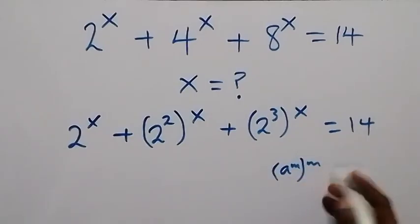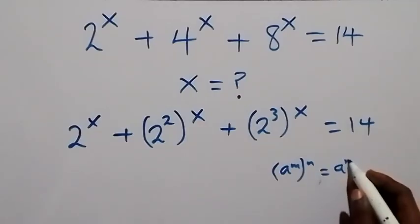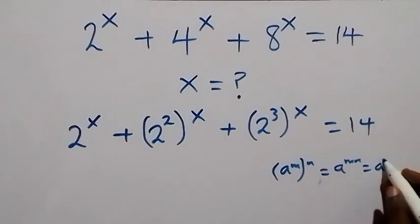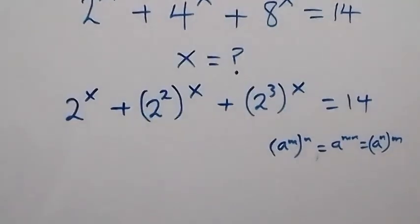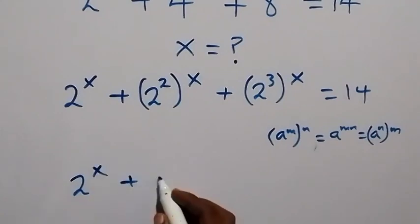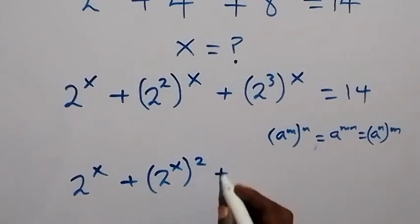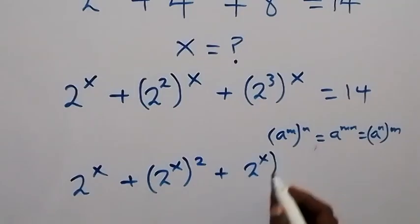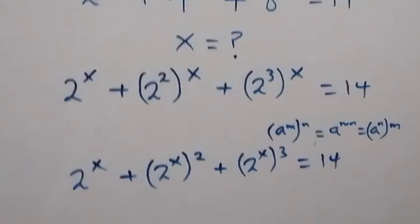From here, on the law of indices, when we have a raised to power m, raised to power n, this can be written as a raised to power m into bracket raised to power n — so we can interchange the power. This will become 2 raised to power x, plus 2 raised to power x, then raised to power 2, plus 2 raised to power x, then raised to power 3, equals to 14.